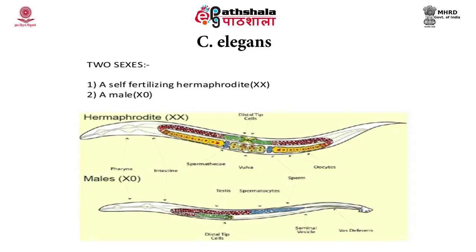The following diagram depicts the two sexes present in C. elegans. The first is a self-fertilizing hermaphrodite depicted by XX and the second is a male depicted by X0. In the hermaphrodite, the various parts labeled in the diagram are ovaries, oviducts, spermatheca and a single uterus. While in the male, we have a single looped gonad, a vas deferens and a tail specialized for mating.